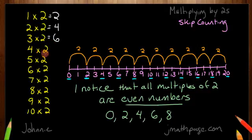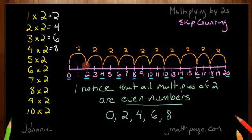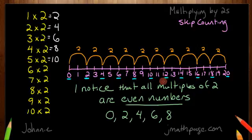Next one: skip counting by 2, four times. 1, 2, 3, 4. And I find myself at 8. So 4 times 2 equals 8. And I find myself at 10. So 5 times 2 equals 10. Skip counting by 2, six times: 1, 2, 3, 4, 5, and 6. And I find myself at 12. 6 times 2 equals 12.